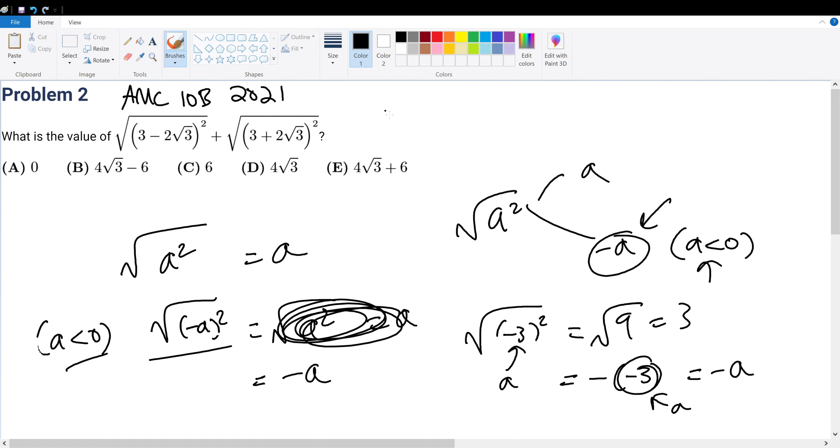So going back to this question: what is 2 times root 3? Root 3 should be a special root that you should know as 1.7 something. Times 2 is roughly 3.4. 3.4 is greater than 3, so that means this following expression will be negative.